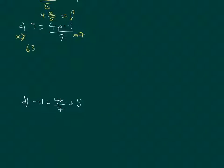Which will give us 63 equals 4p minus 1. We're going to have to add 1 to both sides, which will give us 64 equals 4p. And then finally, divide by 4, which will give us 16 equals p. So p is 16.